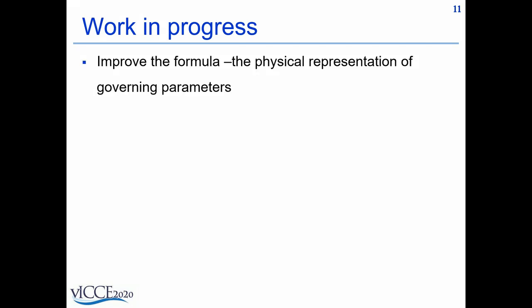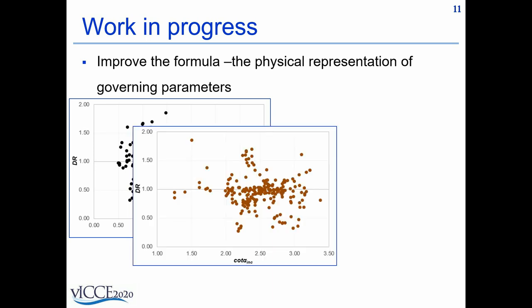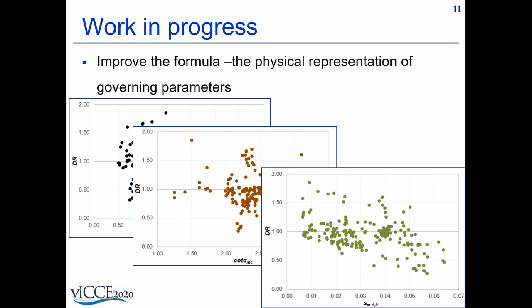At the moment, our team is working on improving the formula in terms of representing the governing parameters that influence wave reflection. As it can be seen, there exists a large scatter with certain parameters like the dimensionless crest freeboard, the slope including the berm and also the wave steepness, proper representation of which can lead to a more robust formula.